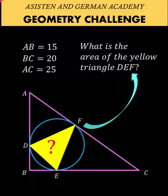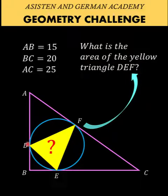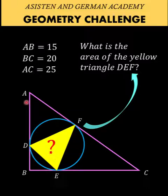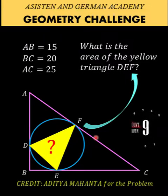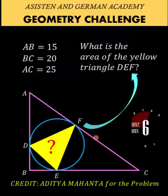Hi everyone, here's our math problem for today. We are given a pink triangle with an inscribed blue circle. At the points of tangency between the triangle and the circle, we have the vertices of a yellow triangle. Our goal is to find the area of this yellow triangle, given that side AB equals 15 units, side BC equals 20 units, and side AC equals 25 units. Thanks to Aditya Mahanta for this problem.